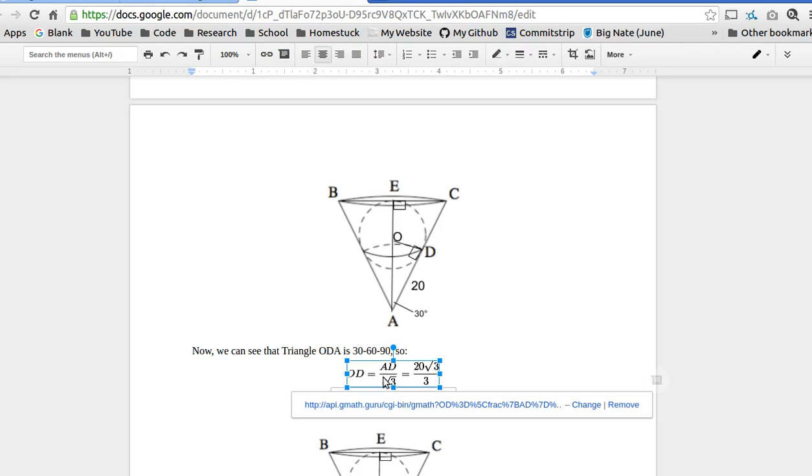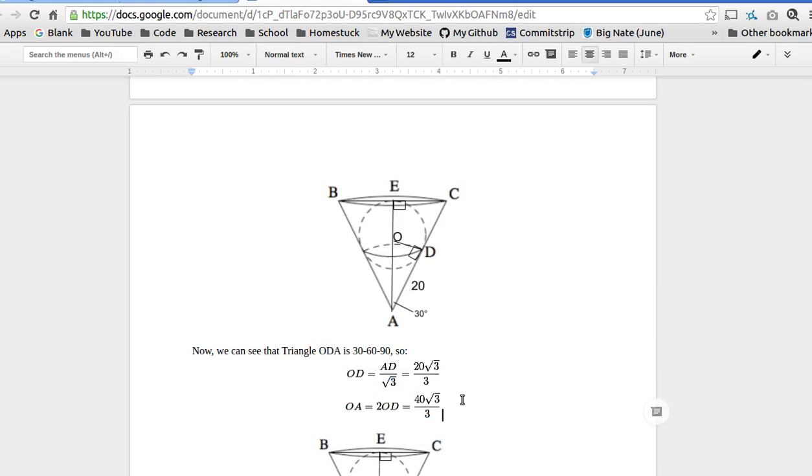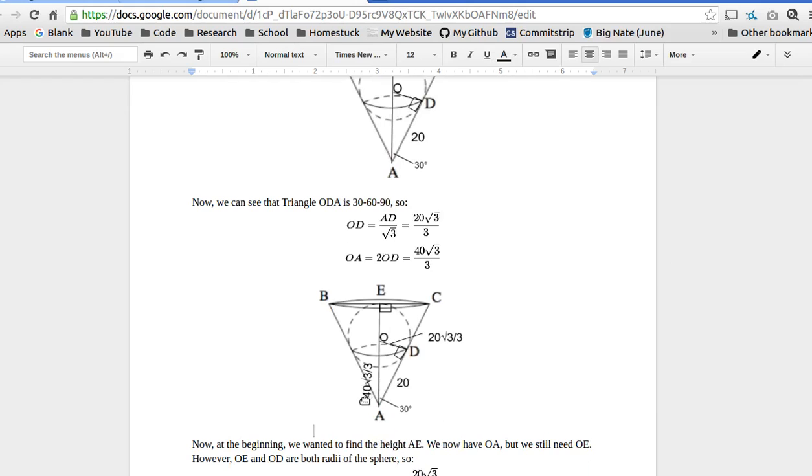So now we've found OD and OA. So to make this more clear, I'm going to draw. So here, 40 square root of 3 over 3 is OA, and 20 square root of 3 over 3 is OD. And now, from the beginning, we wanted to find height AE. We have OA, but the other part of AE is OE. So what is OE?